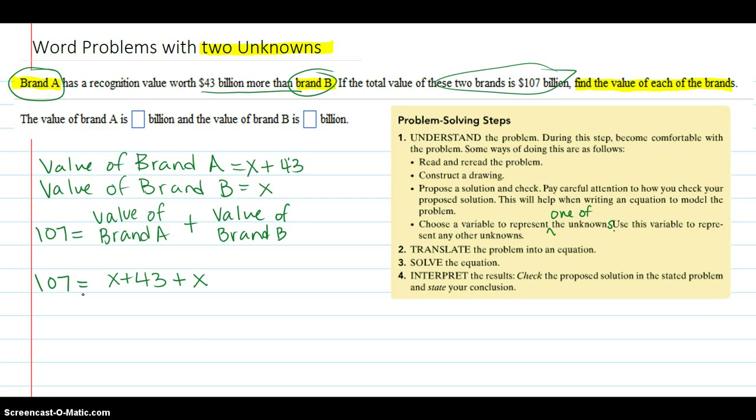Step three: solve the equation. So to solve that, I'm going to combine like terms. 1X plus another 1X is 2X.